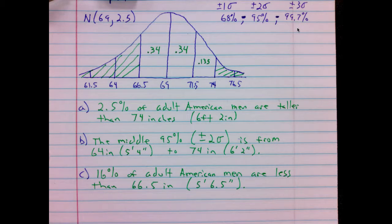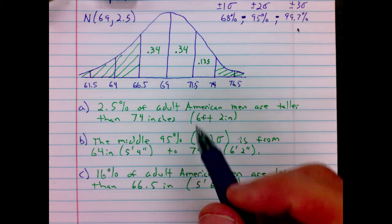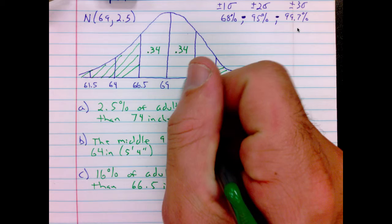Said another way, if an observation is at the 75th percentile, we mean that that observation is greater than or equal to 75% of the observations. So in our case, we're interested in what percentile 71.5 falls at.